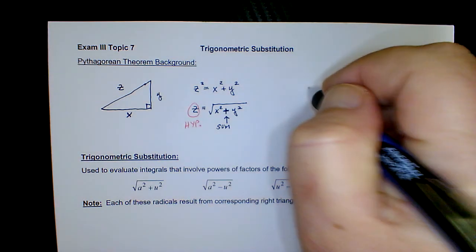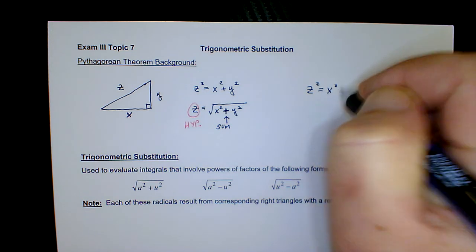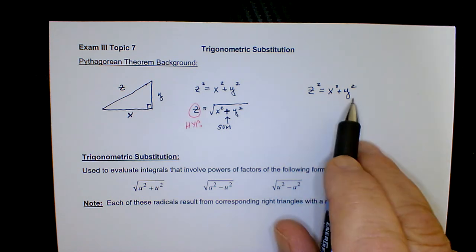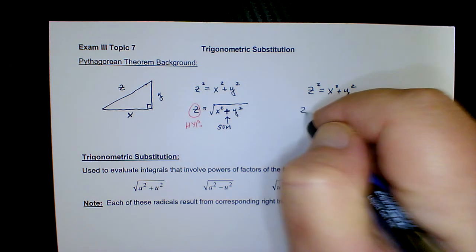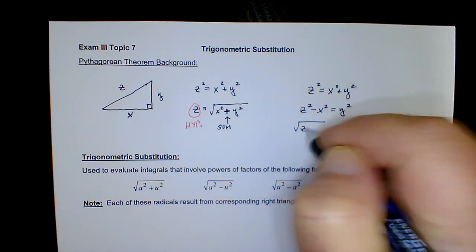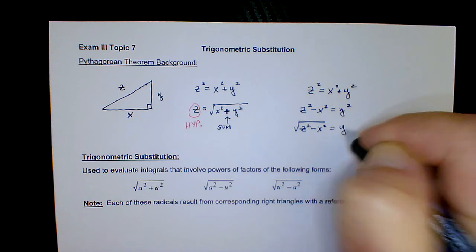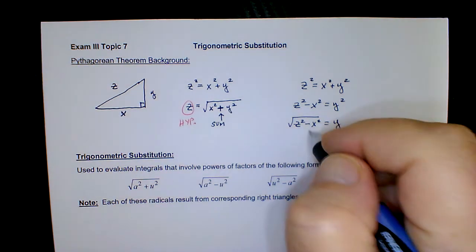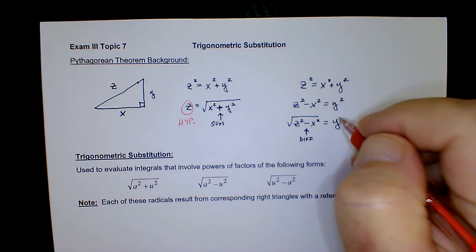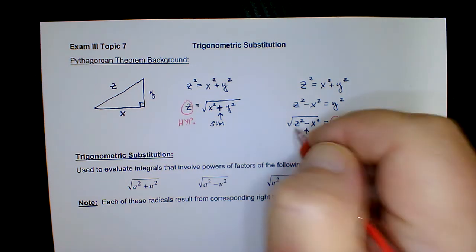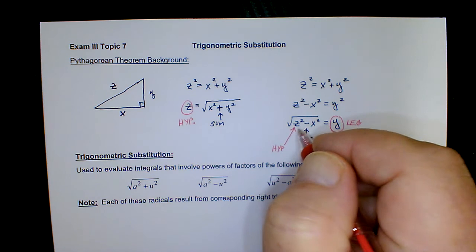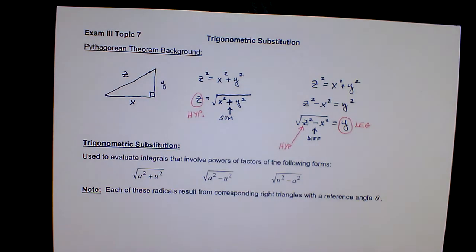The other situation is if the radical part is one of the legs. The only way that can happen is if we solve for y — we transpose the x squared and take the principal or positive square root. So if it's a difference between two squares under the radical, then the radical part must have been a leg, and the hypotenuse is the positive term under the radical. Those things are imperative to understand.